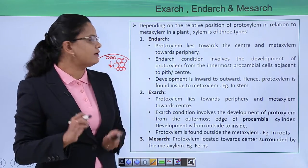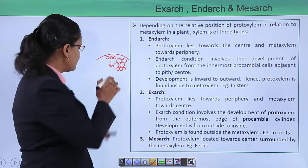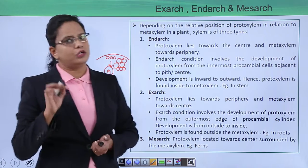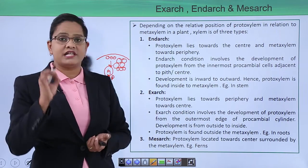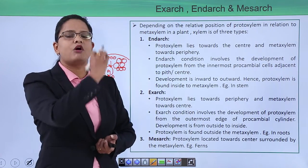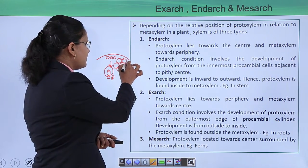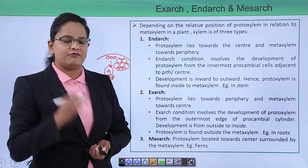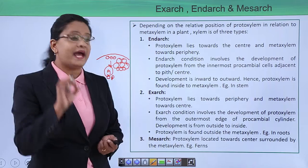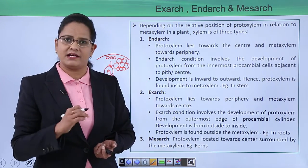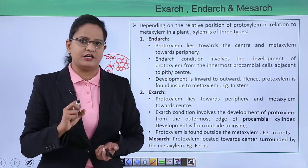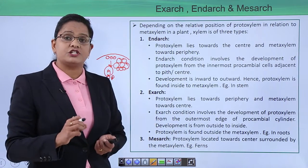In endarch, proto xylem lies towards the center and meta xylem lies towards the periphery. The smaller cells are proto xylem and the bigger cells are meta xylem. Development of proto xylem is from the innermost cambium cells, and as development proceeds from inside to outside, proto xylem is found inside the meta xylem. The endarch condition is a characteristic feature of stems.